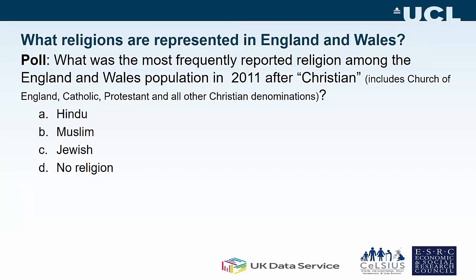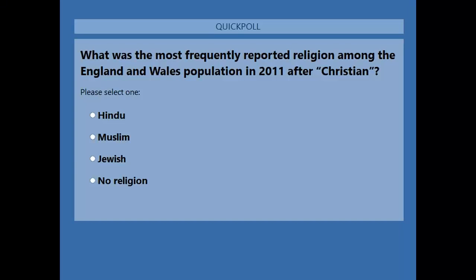The question is: what was the most frequently reported religion among the England and Wales population in 2011, after Christian? You need to be aware that Christian includes Church of England, Catholic, Protestant and all other Christian denominations. Your choices are: Hindu, Muslim, Jewish, or no religion?